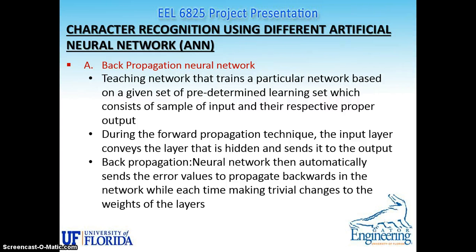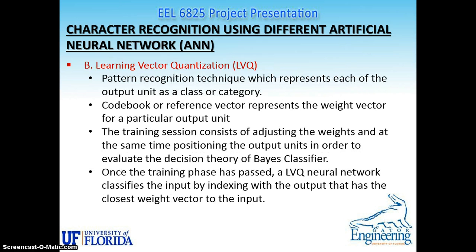Those are the basics of character recognition for the character geometry. Next, we move on to explore some of the artificial neural network techniques. First we start with the backpropagation neural network. Backpropagation neural network is a teaching network that trains a particular network based on a given set of predetermined learning set, which consists of samples of input and the respective proper output. There are two propagation techniques: the forward and the backward. The forward propagation technique has the input layer convey the message through the hidden layer and send it to the output. In backpropagation, the neural network automatically sends the error values to propagate backwards in the network, while each time making interval changes to the width of the layers. Another type of neural network is known as learning vector quantization or LVQ.